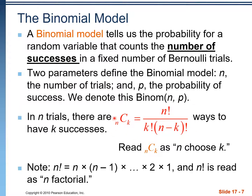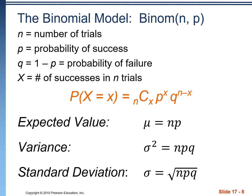The binomial equation uses a combination — how many different ways we can arrange a certain number of objects chosen from a sample. The exclamation point is a factorial, meaning we multiply every number from that number down to one; for example, 4! = 4 × 3 × 2 × 1. In the binomial model, the equation is: combination of n choose x, times P to the x power, times Q to the (n minus x) power — x successes and the remaining n minus x are failures.